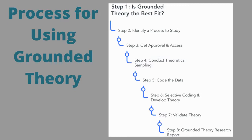After a continuous cycle of data collection, coding and categorizing narrows. Step six, selective coding and the development of theory is done. Step seven involves validating the theory through literature reviews to ensure that the theory is sound. And finally, in step eight, the researcher writes their report on their findings.